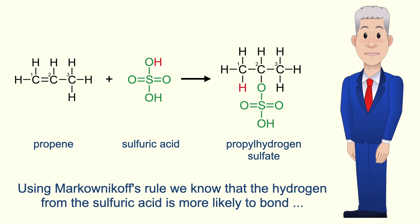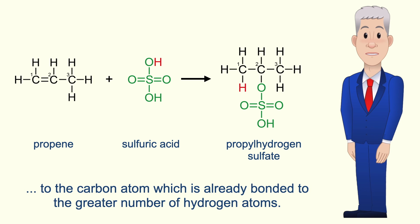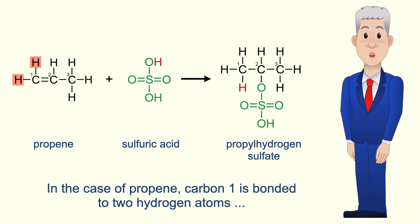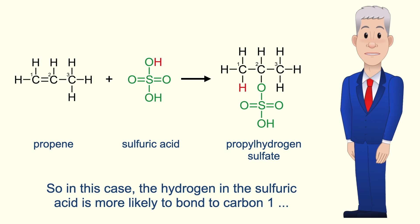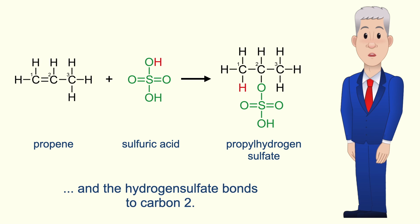I'm showing you here the reaction between propene and sulfuric acid. Using Markovnikov's rule, we know that the hydrogen from the sulfuric acid is more likely to bond to the carbon atom which is already bonded to the greater number of hydrogen atoms. In the case of propene, carbon one is bonded to two hydrogen atoms, whereas carbon two is bonded to only one hydrogen atom. So in this case, the hydrogen in the sulfuric acid is more likely to bond to carbon one, and the hydrogen sulfate bonds to carbon two.